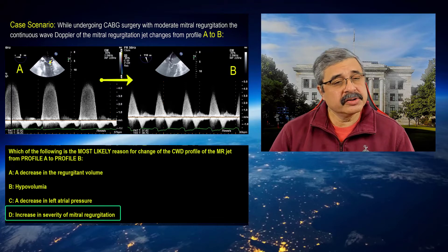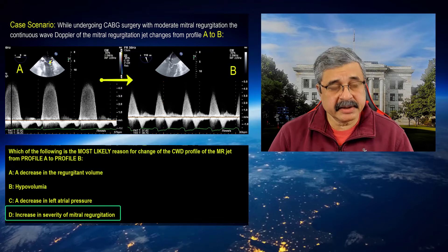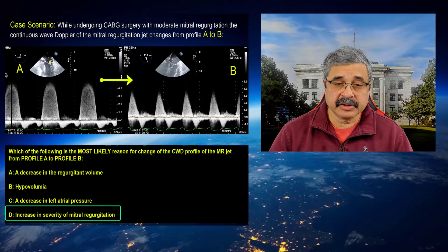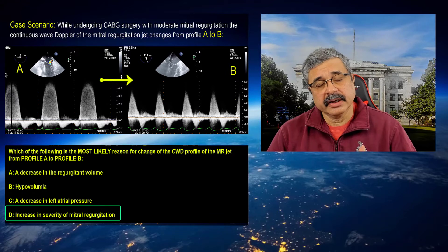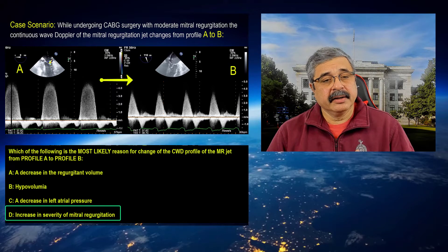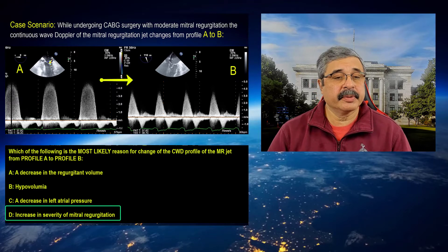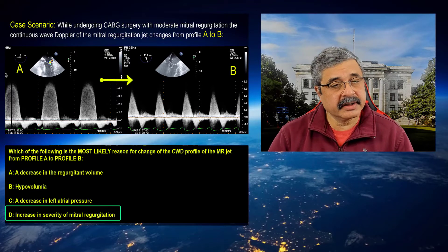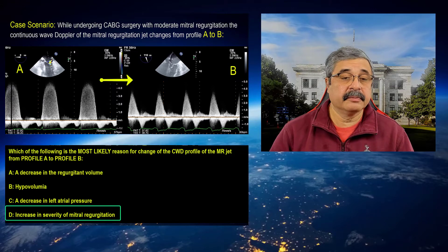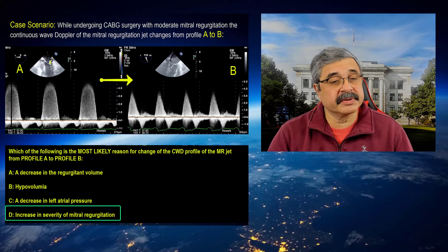but also the manner in which the pressure equilibrates between the left ventricle and the left atrium. Mitral regurgitation starts when the left ventricular pressure exceeds the left atrial pressure, and it continues until the pressure equilibrates between the two chambers. The panel on the left shows a very high-velocity jet of about 4 meters per second,